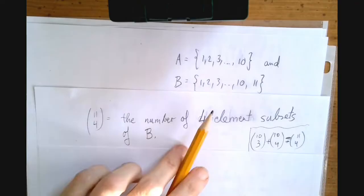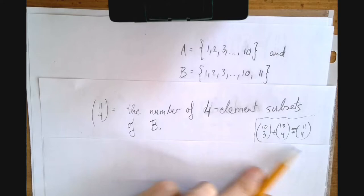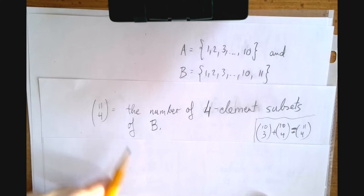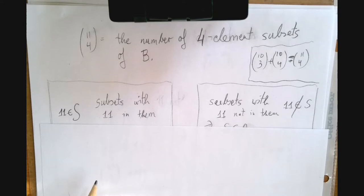We defined A and B and we're going to prove this statement by counting the 4 element subsets of B. We're going to count it in two separate groups. The first group of subsets are the ones that contain 11 and the second group will have subsets that do not contain 11.